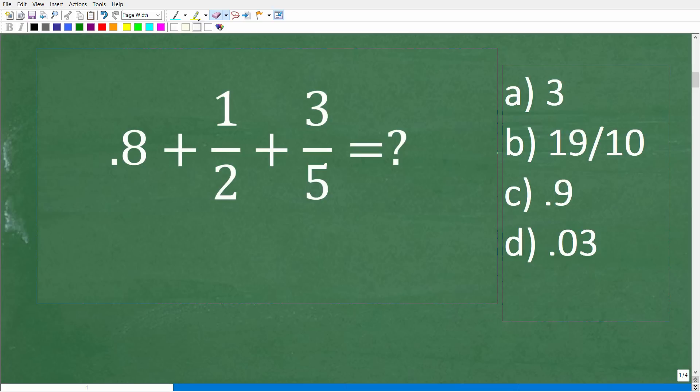Here is our problem. We're not going to be using a calculator. We have 0.8 plus 1 half plus 3 fifths. The first thing that we need to decide here is do we want to work with decimals or do we want to work with fractions?